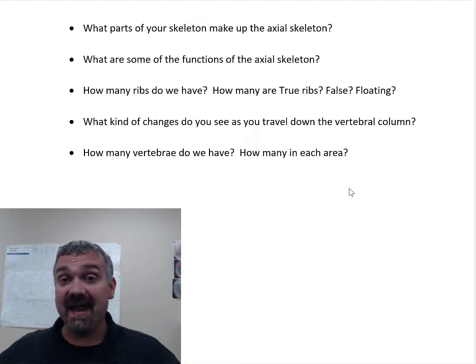Well, appendicular, think appendages, your limbs. Axial, basically it's like you rotate around an axis, so the center, the core of your skeletal system is going to be the axial skeleton. So think your skull, so your head, your vertebral column, so your cervical spine, thoracic spine, lumbar spine, and sacrum, and your ribs into the front with your sternum there. So that's going to be the axial skeleton.